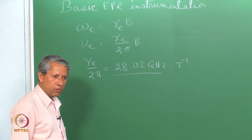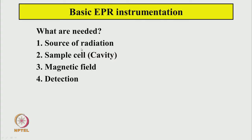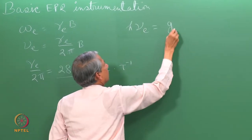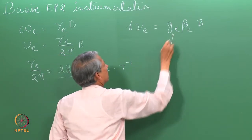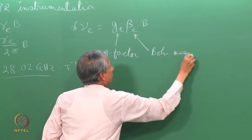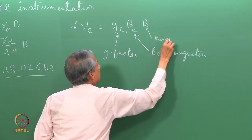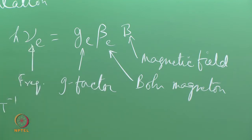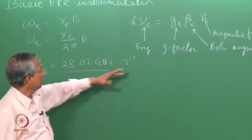What do we need to have a spectrometer based on the principles of EPR spectroscopy? We need a source of radiation, a sample cell to hold the sample (called a cavity in this parlance), a magnetic field, and a detection system. The resonance condition is H·nu equals g_E·beta_E·B, where g_E is the G factor, beta_E is the Bohr magneton, and B is the magnetic field. This frequency of resonance comes in the microwave region for a typical magnetic field of the order of a tesla.